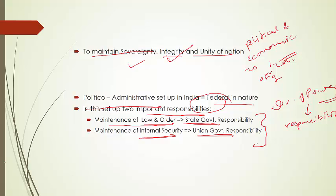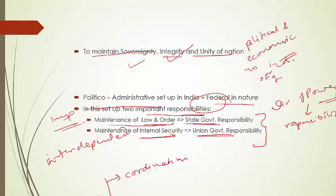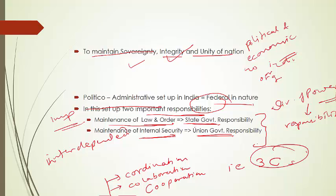Maintenance of law and order and maintenance of internal security are two important administrative subjects which are highly interdependent. Thus there is a strong need for the three C's — coordination, collaboration, and cooperation — between the state government and the union government to make people feel safe and secure.